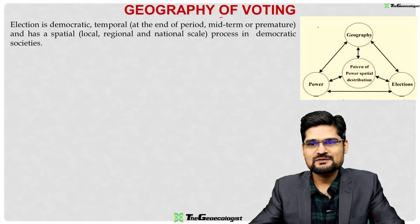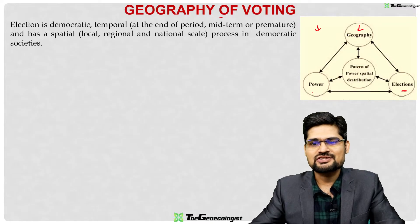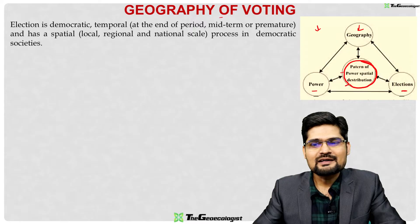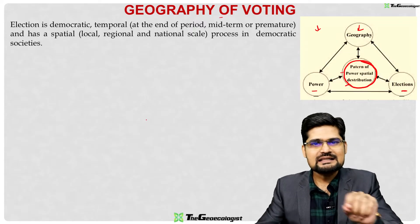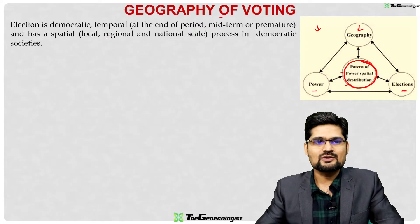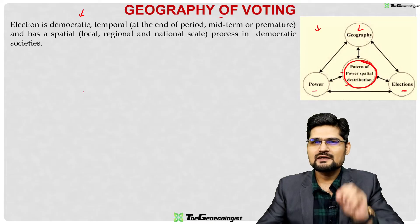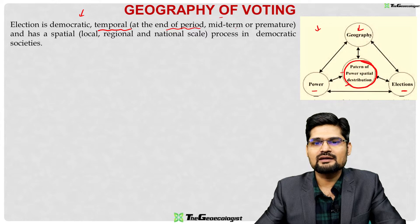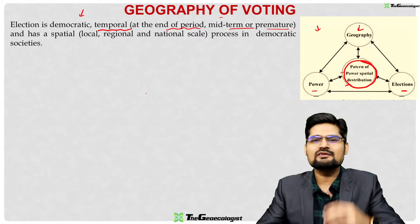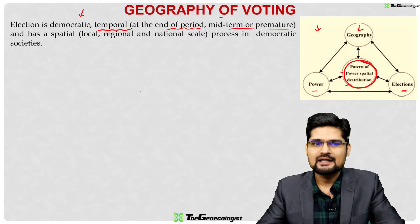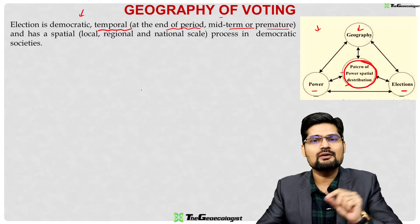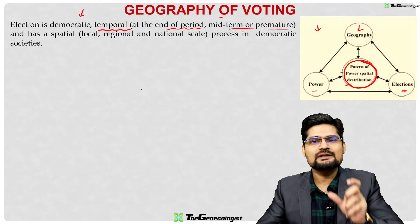If you observe this particular diagram, it shows a relationship between geography, elections and power, along with a combination of pattern of power and spatial distribution. Election is a democratic procedure and it is also temporal — at the end of period, midterm or premature, we have different kinds of elections across the world, and it also has a spatial component which we talk about in electoral geography.